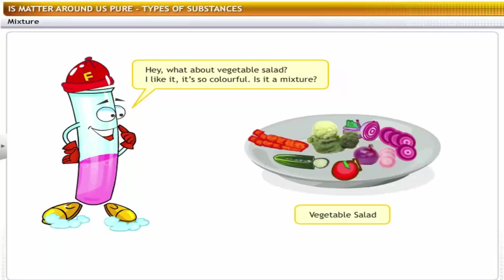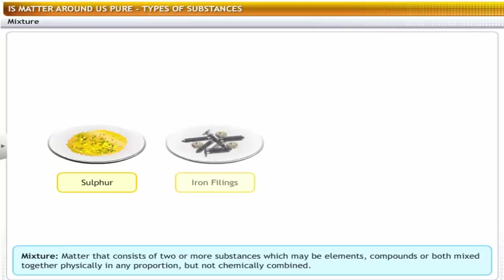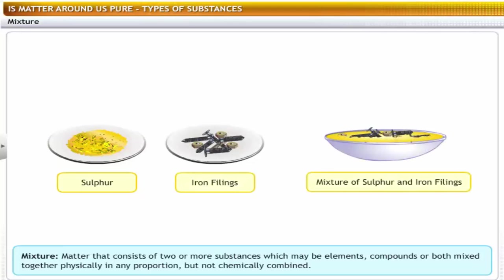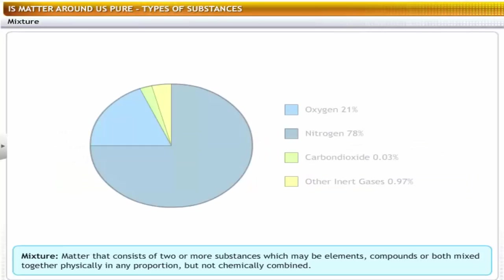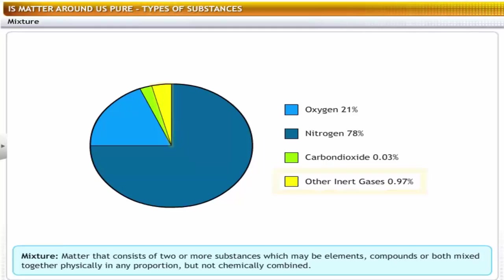What about vegetable salad — is it a mixture? Yes. The salad contains a variety of vegetables like carrot, cucumber, beetroot, tomato, cabbage, and onion. You can segregate each of the vegetables from one another. So vegetable salad is a mixture. A mixture is matter that consists of two or more substances — which may be elements, compounds, or both — mixed together physically in any proportion, but not chemically combined. For example, air is a mixture of gases like oxygen, nitrogen, carbon dioxide, etc. These gases are not chemically combined with one another and can be separated by suitable means.